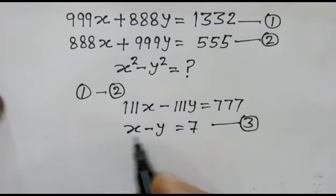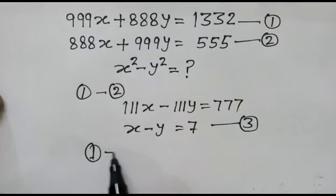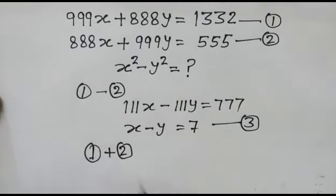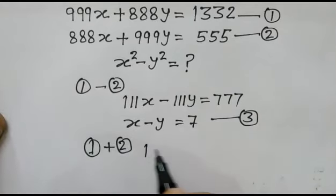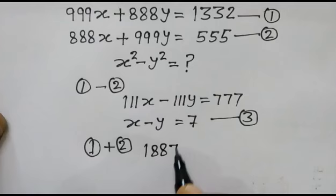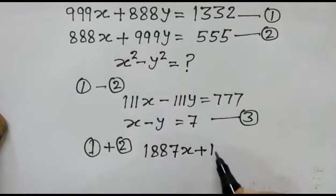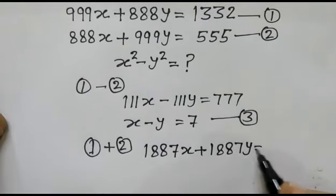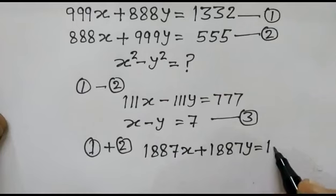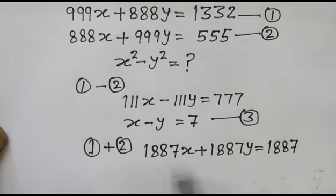Now, we will add equation first and second. We get 1887x plus 1887y equals 1887.